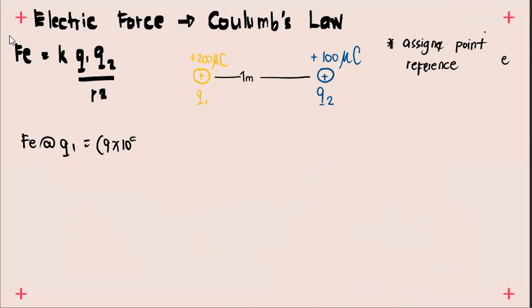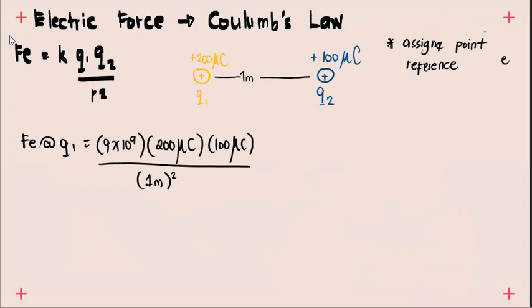K is equal to 9 times 10 raised to 9, multiplied by 200 microcoulomb times 100 microcoulomb over the distance between them, which is 1 meter squared. Take note that microcoulomb is equal to 10 raised to negative 6 coulomb. The answer is 180 newtons.